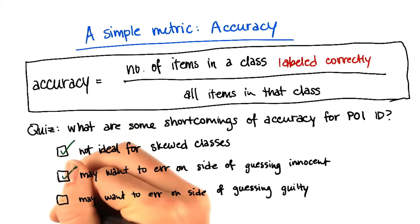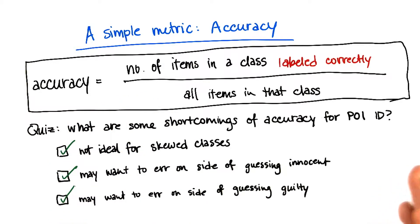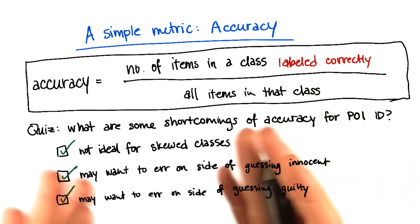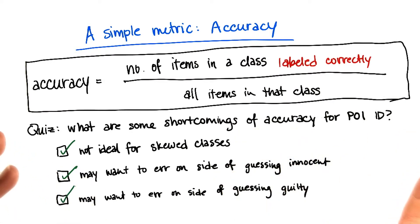All of these are concerns you should have when thinking about the metric you should pick. And they all happen to be problems with accuracy in the case of identifying persons of interest.